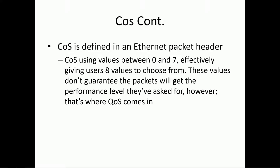QoS priority is defined in the packet header, done between zero and seven. You assign the value between zero and seven, guaranteeing a specific performance level based on the available bandwidth. There's no guarantee the packet will always get the performance level requested, but if QoS is functioning, higher-priority packets should be served accordingly.